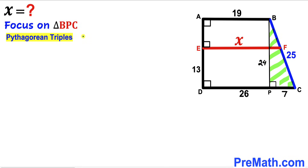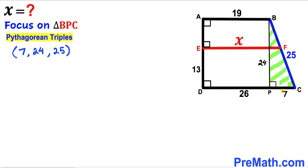Here's an alternative approach: recall the Pythagorean triplet 7, 24, and 25. We know the two known lengths are 7 and 25, so the unknown side is indeed 24.